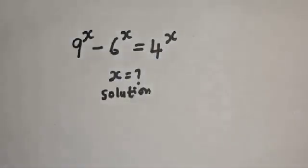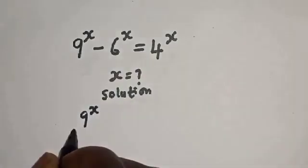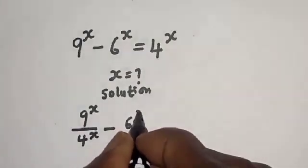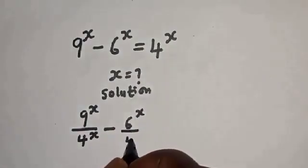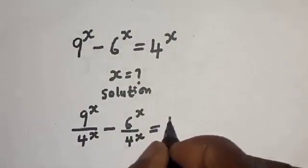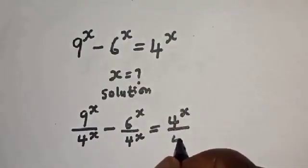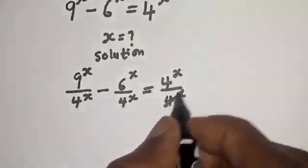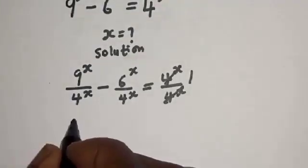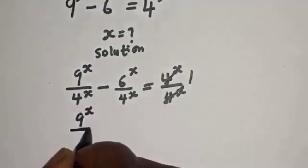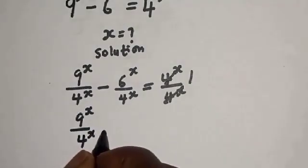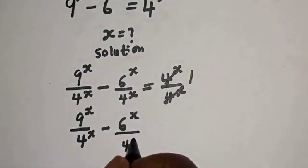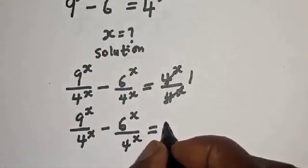Let's divide all terms by 4 raised to power s. We get: 9 raised to power s divided by 4 raised to power s, minus 6 raised to power s divided by 4 raised to power s, is equal to 4 raised to power s divided by 4 raised to power s. This last term cancels to give 1.